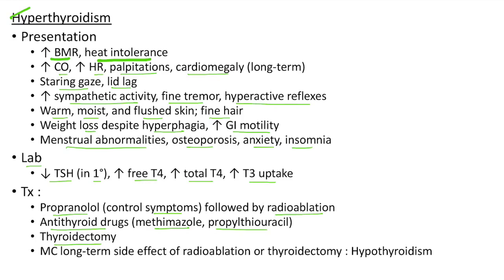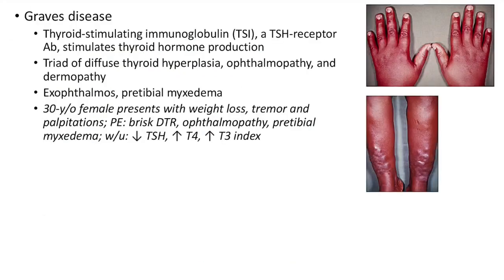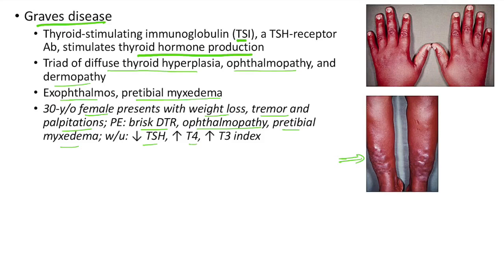Now let us see about Graves' disease. In this case there is thyroid stimulating immunoglobulin (TSI), which is a TSH receptor antibody. This stimulates thyroid hormone production leading to hyperthyroidism. There will be a triad of diffuse thyroid hyperplasia, ophthalmopathy and dermopathy, along with exophthalmos and pre-tibial myxedema. This picture shows pre-tibial myxedema seen in Graves' disease. Clinical case: A 30-year-old female presents with weight loss, tremor and palpitations. Physical examination shows brisk deep tendon reflexes, ophthalmopathy and pre-tibial myxedema. Workup shows low TSH, elevated T4 and T3 index — a classic case of Graves' disease.